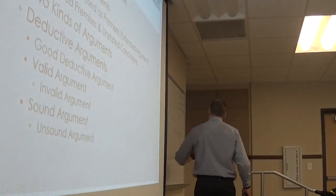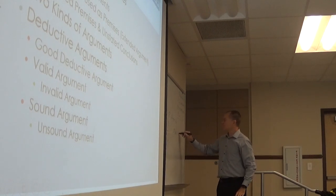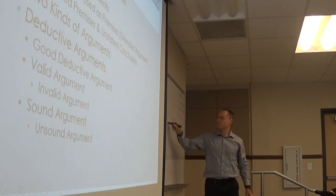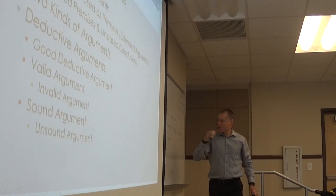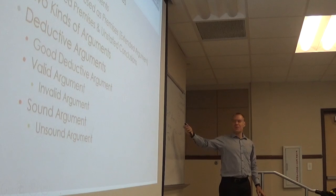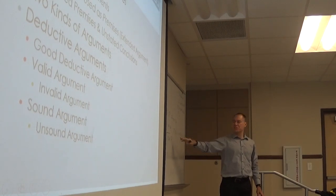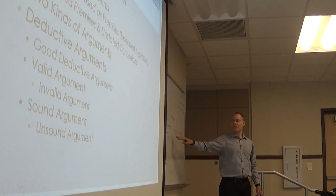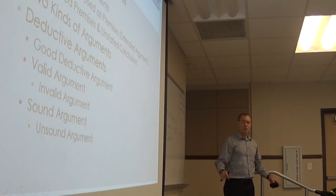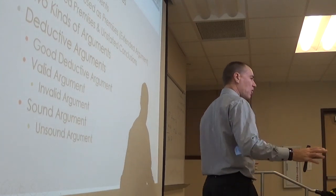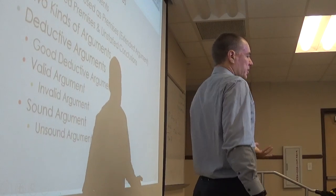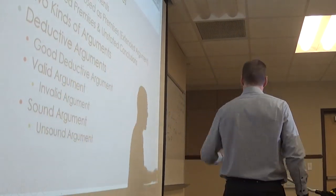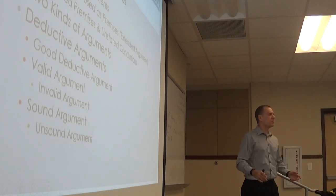A close cousin of this is modus tollens, known as denying the consequent, and it's also a good argument. Its form: premise 1, if P then Q; premise 2, not Q; conclusion, not P. For example: if today is Wednesday then tomorrow is Thursday; tomorrow is not Thursday; therefore today is not Wednesday. That's good logic. We'll see in Part 4 all kinds of deductive arguments. They split into good ones — valid, like these — and the bad ones, the invalid.